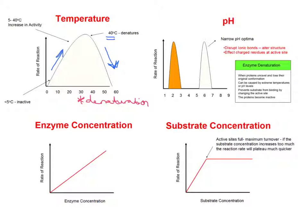When we increase enzyme concentration, the rate of reaction increases in a directly proportional relationship, and that continues — as enzyme concentration goes up, so too does the rate. With substrate concentration, we also have a proportional relationship at the beginning, but then there's a plateau. That's because active sites become full — there is only a maximum number of active sites we can fill. If substrate concentration increases too much, the reaction rate will plateau. You can overload the reaction with lots of substrate, but if enzyme concentration is fixed, we can only fill a certain number of active sites, so the rate plateaus.